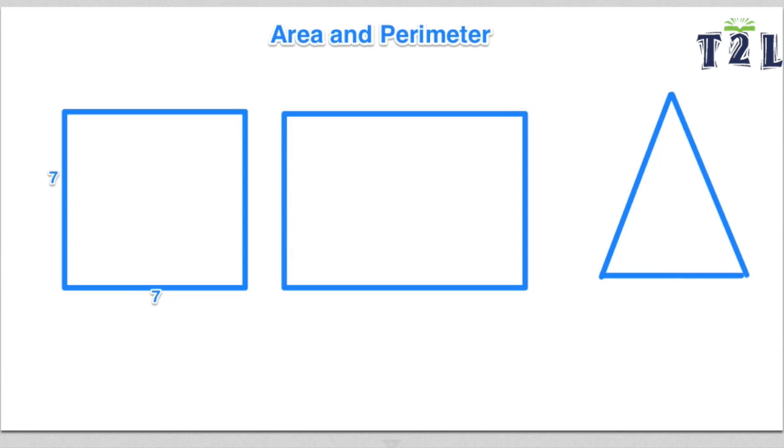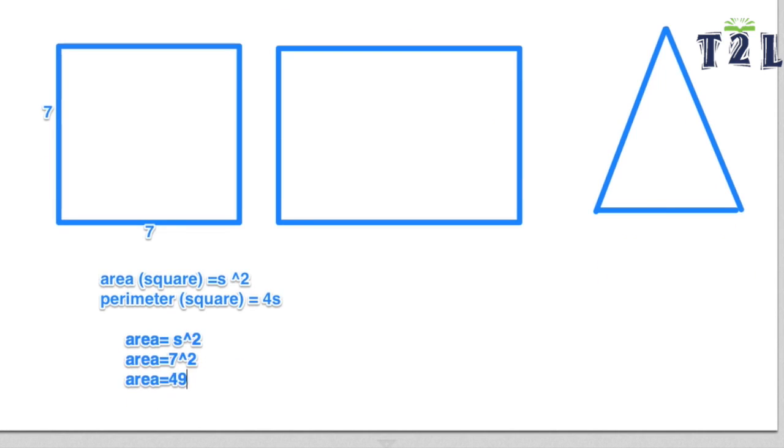The formula for the area of a square is side squared. So say we have a side length of 7, you're just going to square 7 to get the area, which is 49. The formula for the perimeter of a square is side times 4 because there are four sides and they're all congruent. So you're going to times 4 by 7 and you're going to get a perimeter of 28.